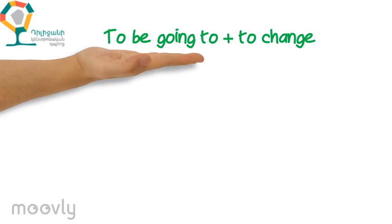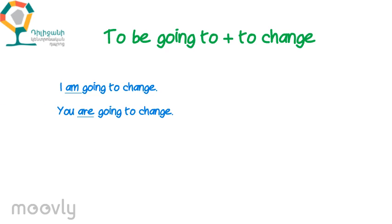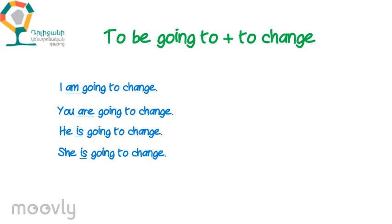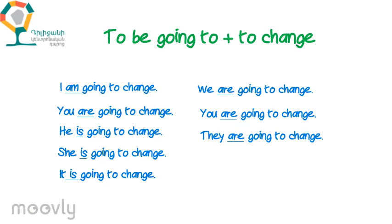Now let's make sentences using 'to be going to' with the verb 'to change'. I am going to change. You are going to change. He is going to change. She is going to change. It is going to change. And for the plural: we are going to change, you are going to change, and they are going to change.